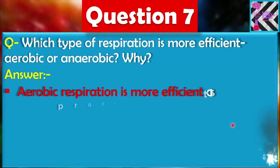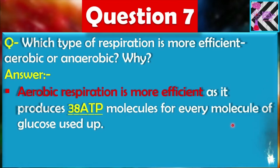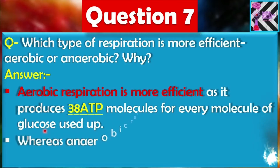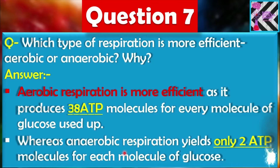Aerobic respiration is more efficient as it produces 38 ATP molecules for every molecule of glucose used up. Aerobic respiration is present in all complex or higher organisms. As we saw in the equation, from one glucose molecule we get 38 ATP molecules of energy. Whereas anaerobic respiration yields only 2 ATP molecules for each molecule of glucose — this type of respiration is present in organisms like yeast. Since 38 ATP is much more than 2 ATP, aerobic respiration is more efficient than anaerobic respiration.